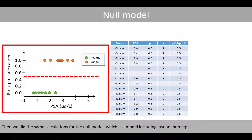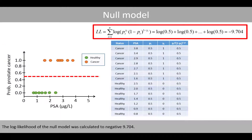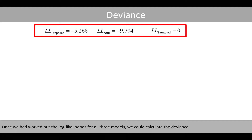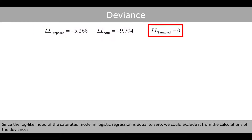Then we did the same calculations for the null model, which is a model including just an intercept. The log likelihood of the null model was calculated to negative 9.704. Then we did the same calculations for the so-called saturated model. Since the log likelihood of the saturated model in logistic regression is equal to zero, we could exclude it from the calculations of the deviances.